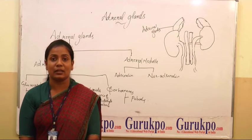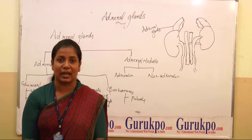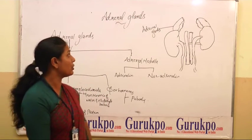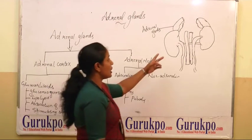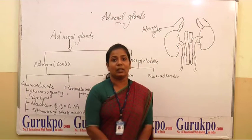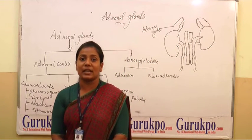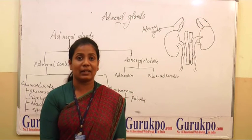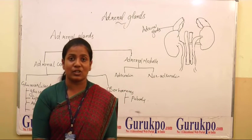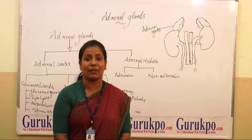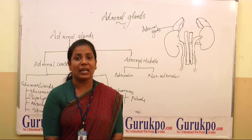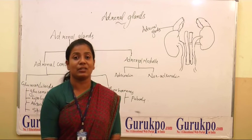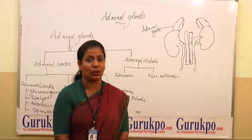Adrenal glands are also known as suprarenal glands. There are two adrenal glands present on the top of the two kidneys in our body. They are 4 centimeters long and 3 centimeters thick. The right adrenal gland has a triangular shape and the left adrenal gland has a semilunar shape. Each adrenal gland has two distinct structures: the adrenal cortex and the adrenal medulla.